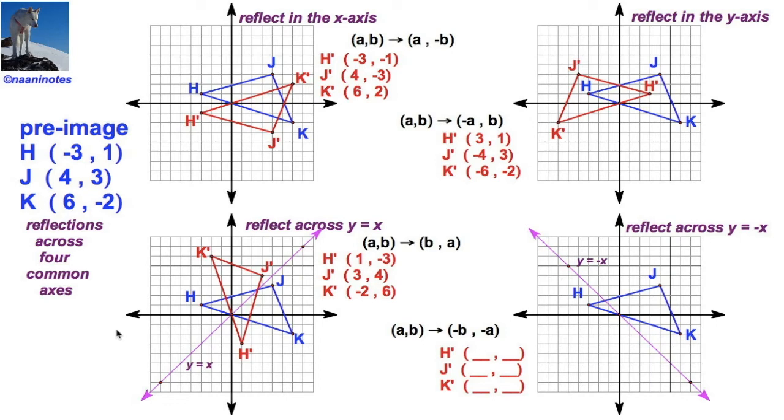Let's see if we can do just one more reflection. A, b is going to map to the opposite of b, opposite of a. We're going to switch the order and the signs, toggle the signs.